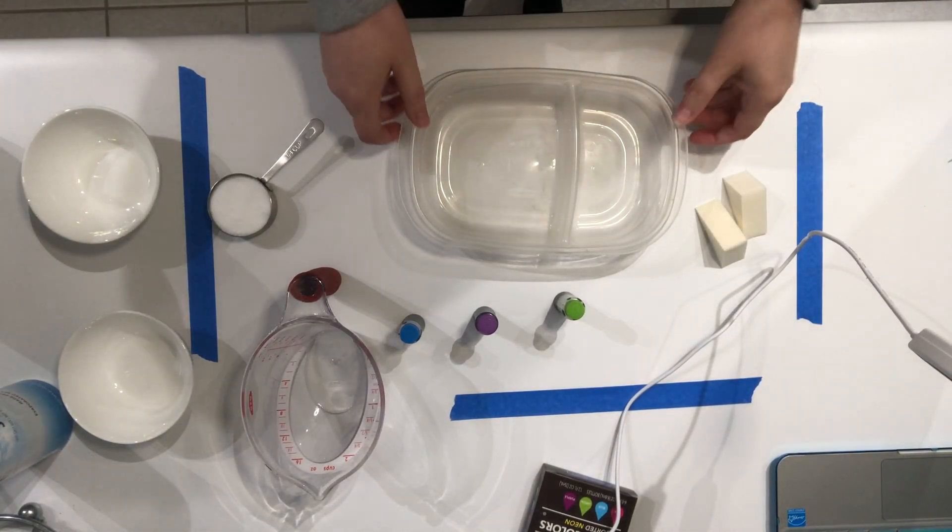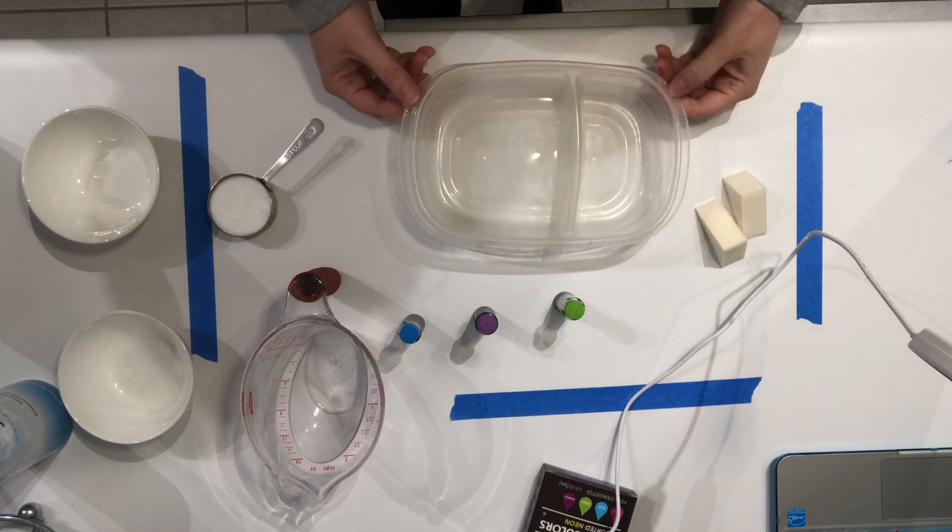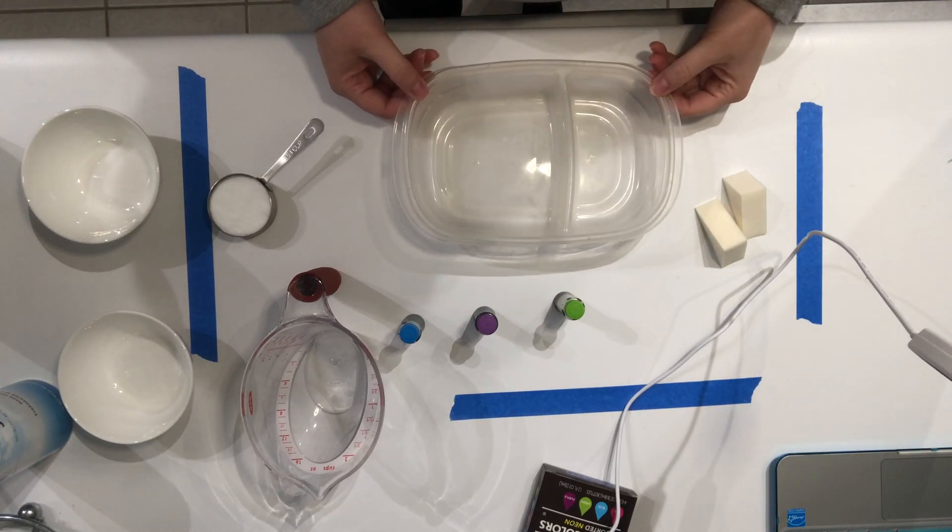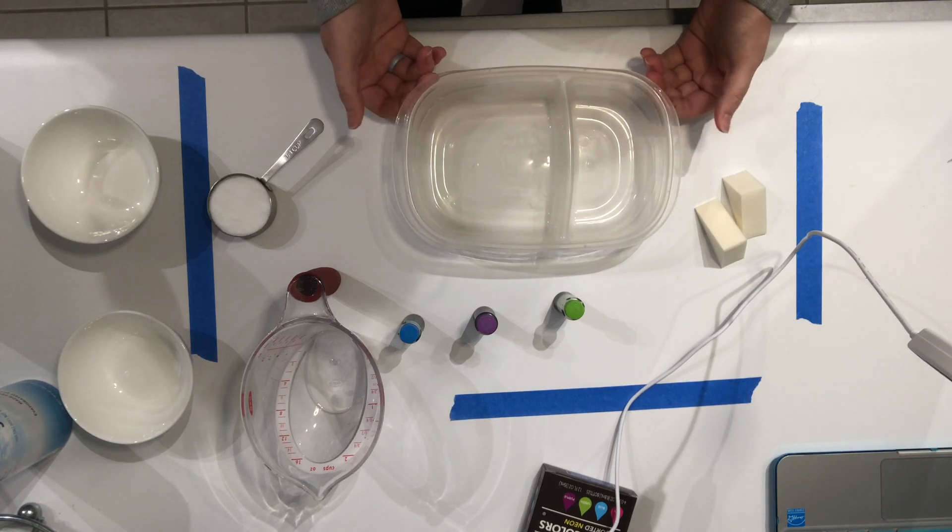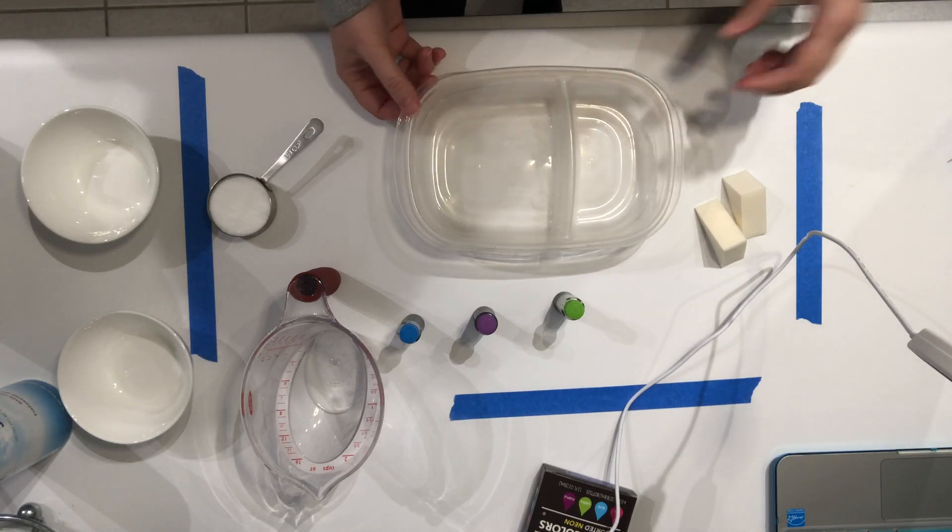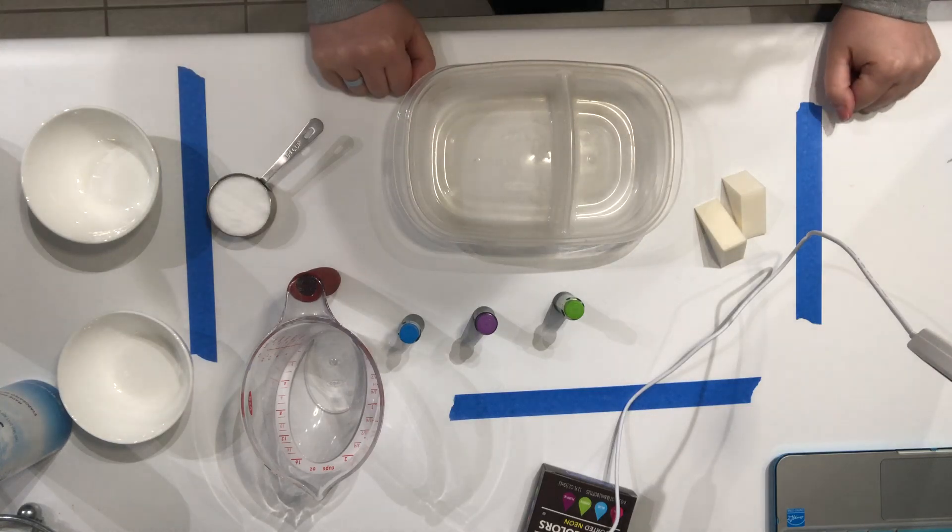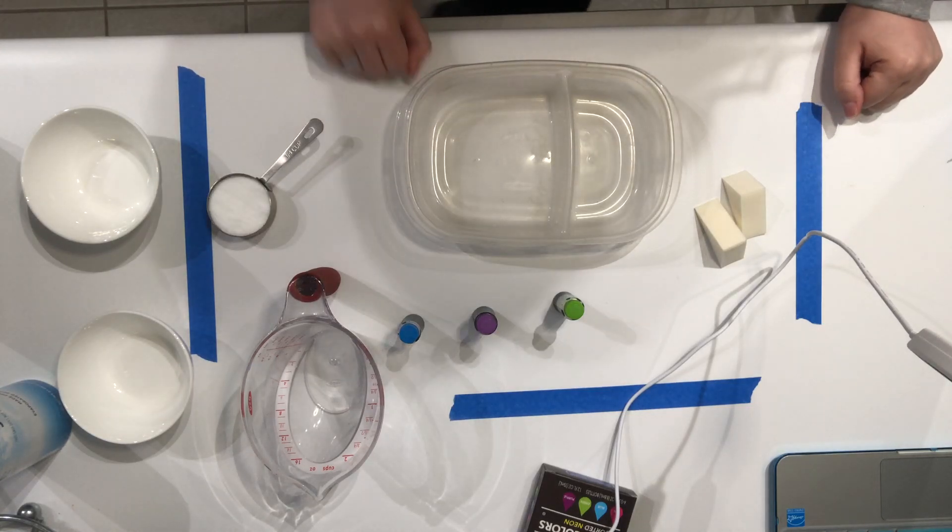All right, hey sixth graders. We are going to try an at-home experiment since we aren't able to do a lot of hands-on while we are away from school. So we are going to make salt and vinegar crystals.